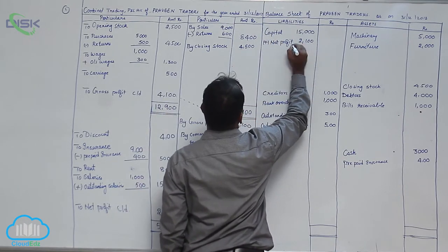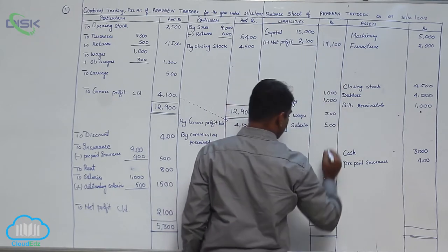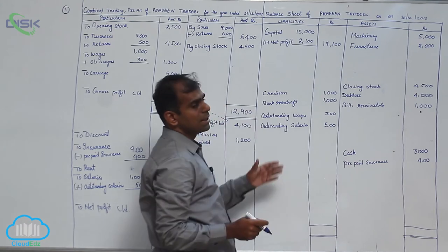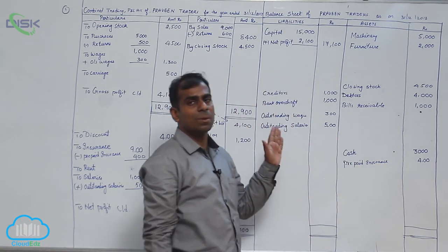$2,100, so $1,100 is your total. Now when you total both sides of your balance sheet, they should match well.